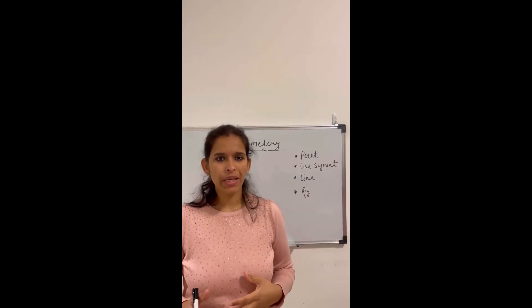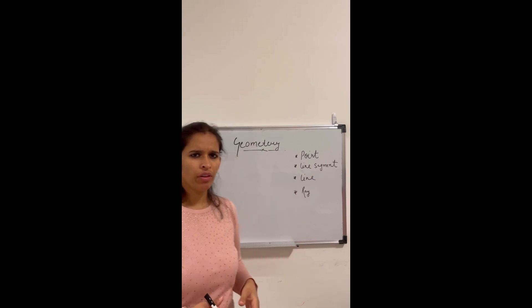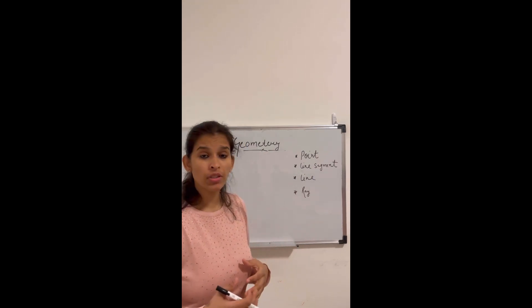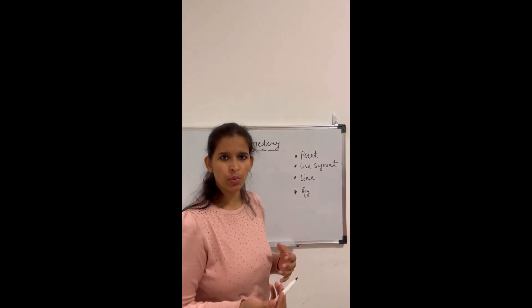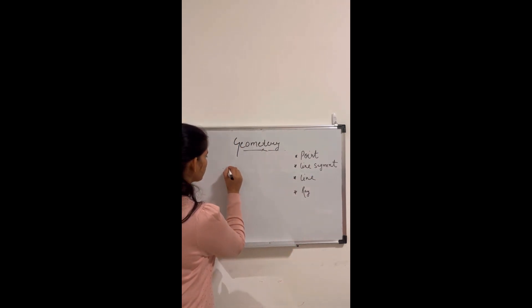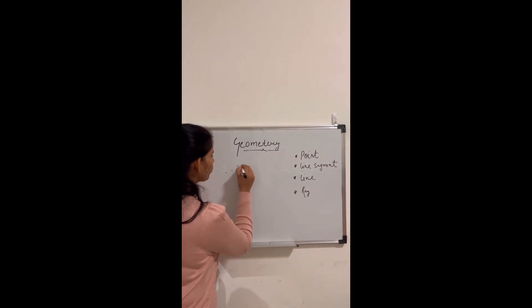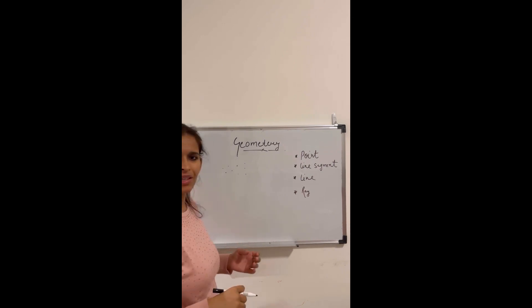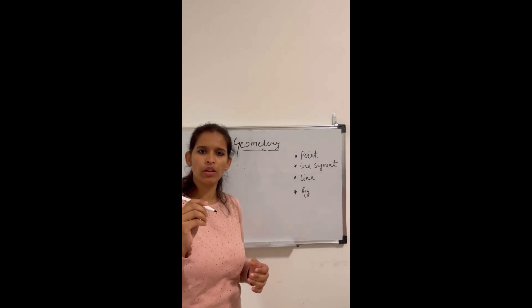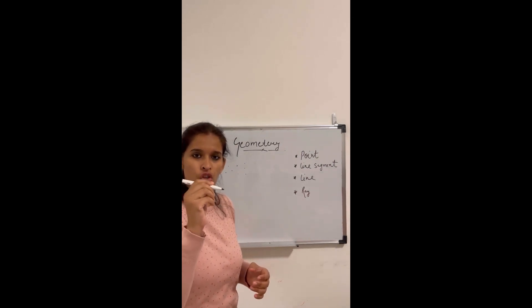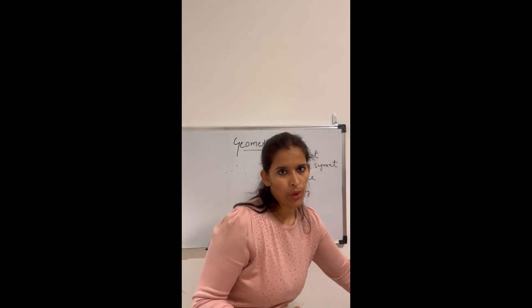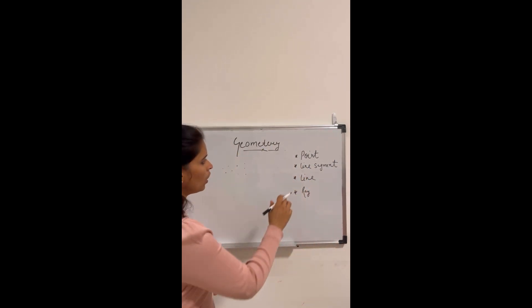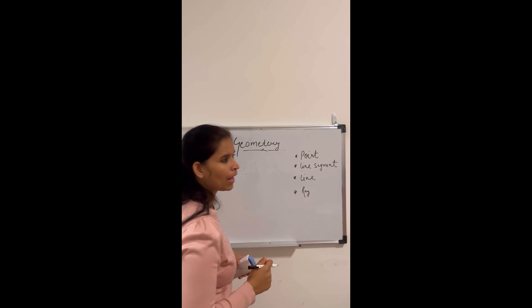Let's learn the basics of geometry. The first thing that comes up is a point. A point is a dot which we make with a pen, pencil, or a sharp object. These kinds of dots are called points.